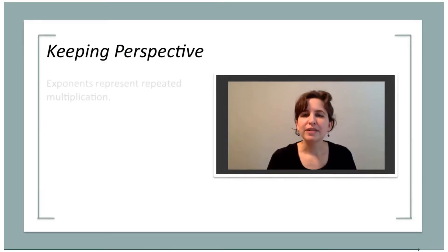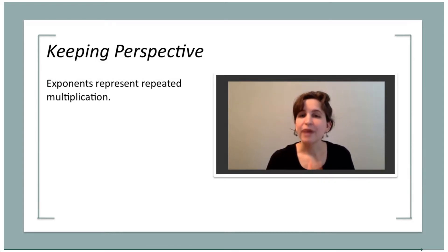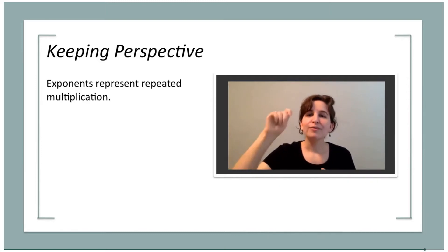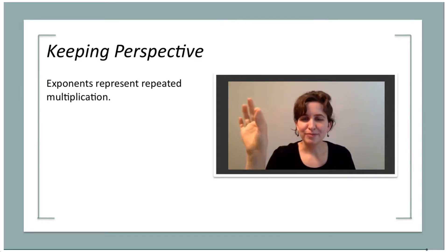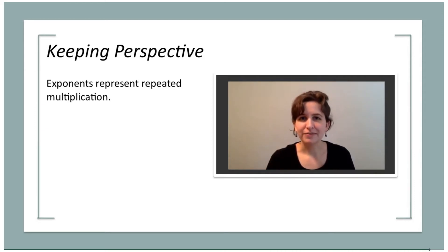Exponents are simply a shorthand way of representing repeated multiplication. Rather than writing 2 times 2 times 2 times 2 times 2 times 2 times 2, we can just write 2 and a little superscript number to tell us how many times we want to multiply 2 by itself.